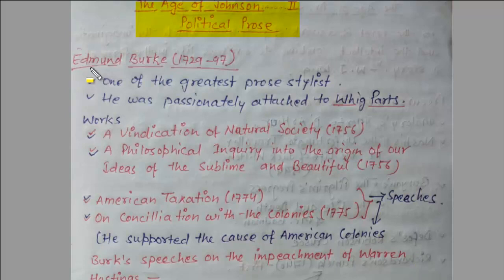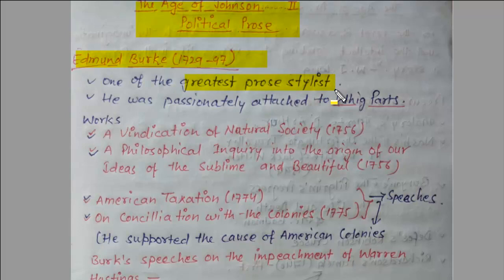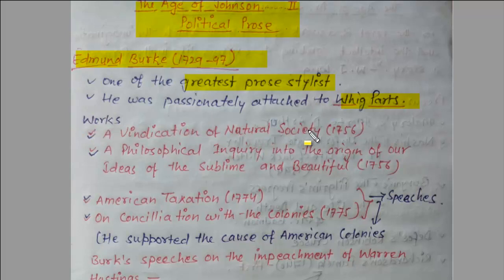Let's start the discussion. Edmund Burke is the first writer we will be talking about. He lived between 1729 to 1797, and he is one of the greatest prose stylists of the time. He was passionately attached to the Whig party — so he was not on the Tory side but on the Whig side.